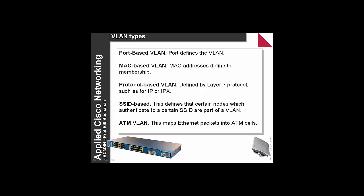The basic VLAN types are: allocation by port on the switch; MAC-based VLAN, where depending on the MAC address it is assigned to a certain VLAN; by protocol, such as IP or IPX; in a wireless system with multiple SSIDs, we can assign each SSID to a certain VLAN, allowing us to span across various networks and still connect to the same VLAN; and ATM VLANs for switching ATM cells.